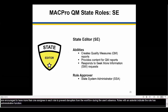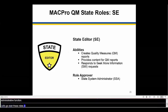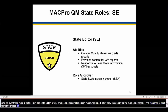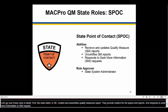Let's go over these roles in detail. First, the state editor, or SE, creates and assembles quality measure reports. They also provide content for the QM reports and respond to Seek More Information, or SMI, requests. The state point of contact, or SPOC, reviews and updates quality measure reports, uncertifies quality measure reports, and may also respond to SMI requests.